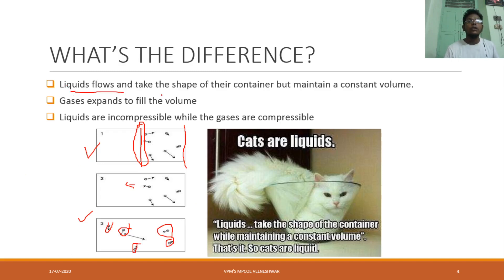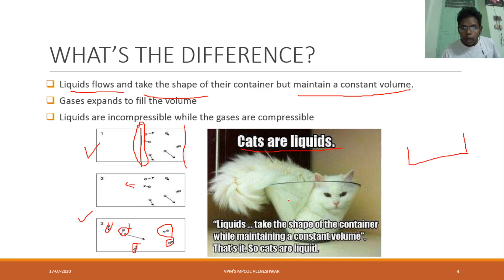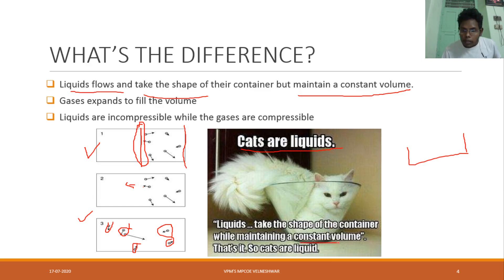Liquids flow and take the shape of their container but maintain constant volume. As an example, imagine a cat sitting in one jar — the cat gets compressed into the shape of the jar, but there is no change in volume. That is called constant volume. The cat here represents a liquid in this analogy — don't think the cat is actually a liquid.